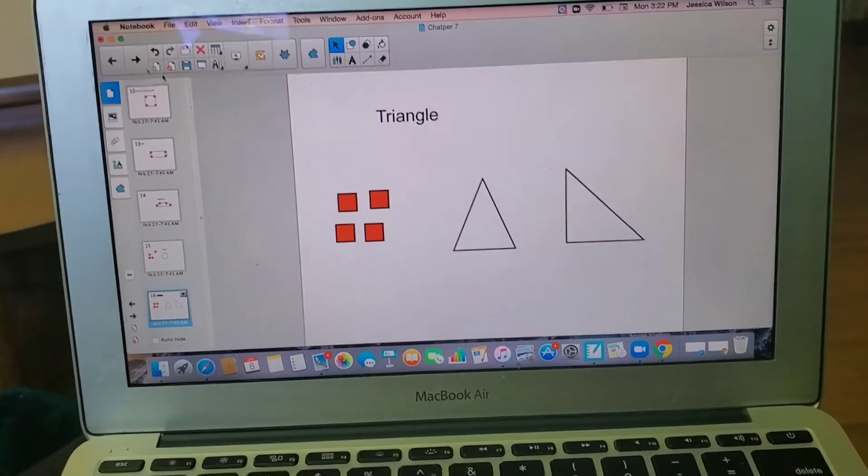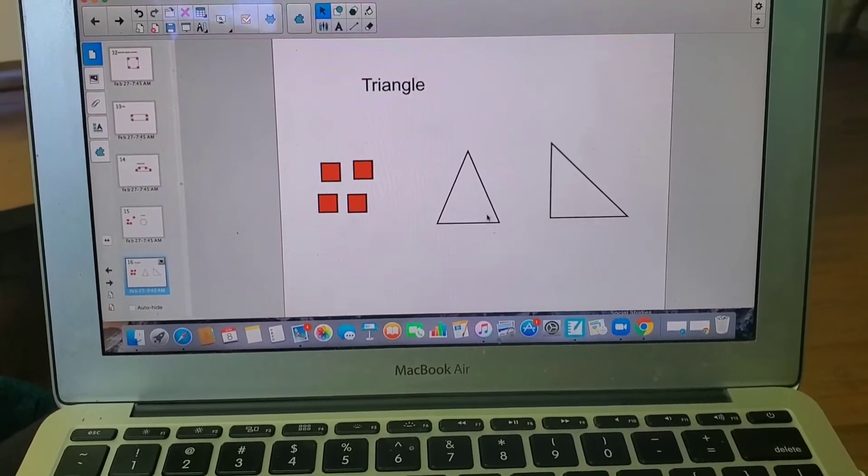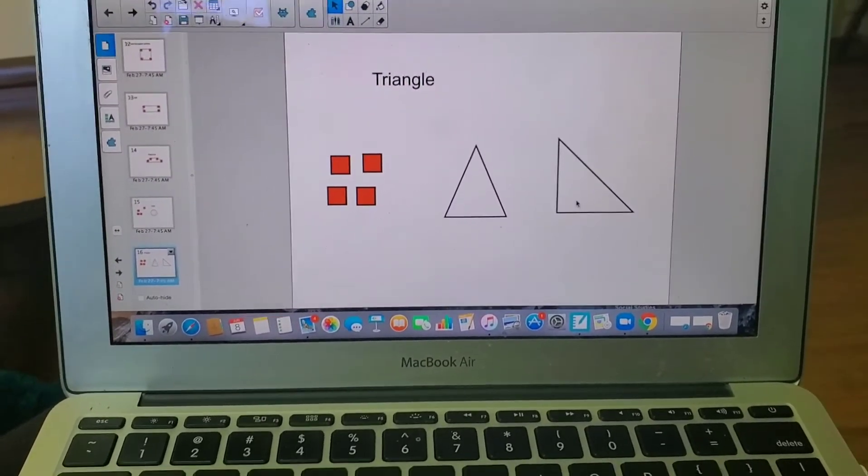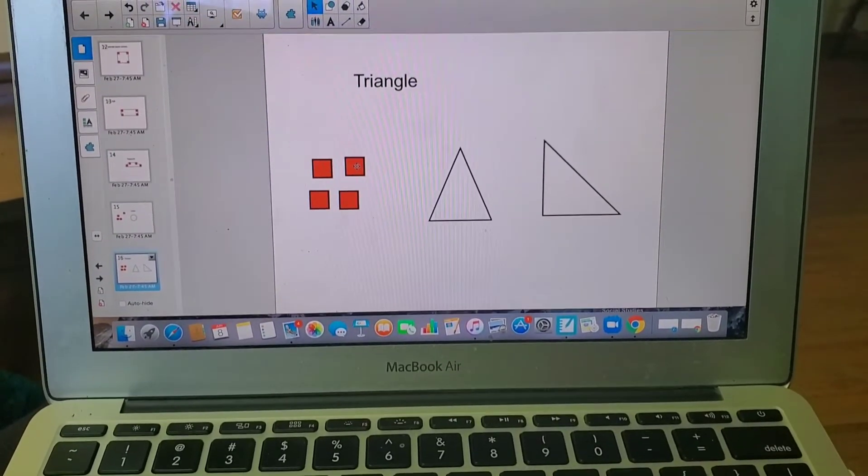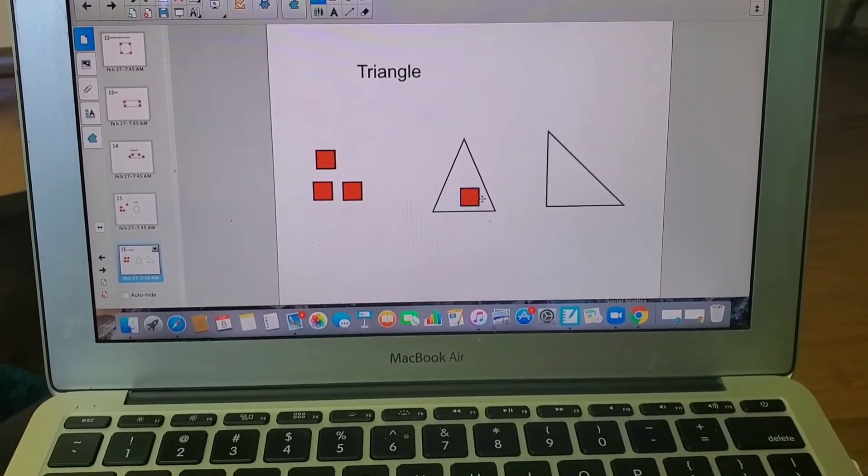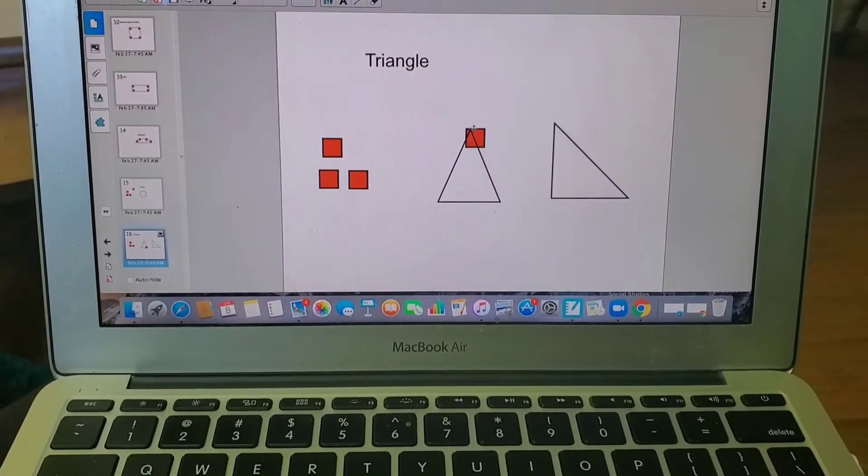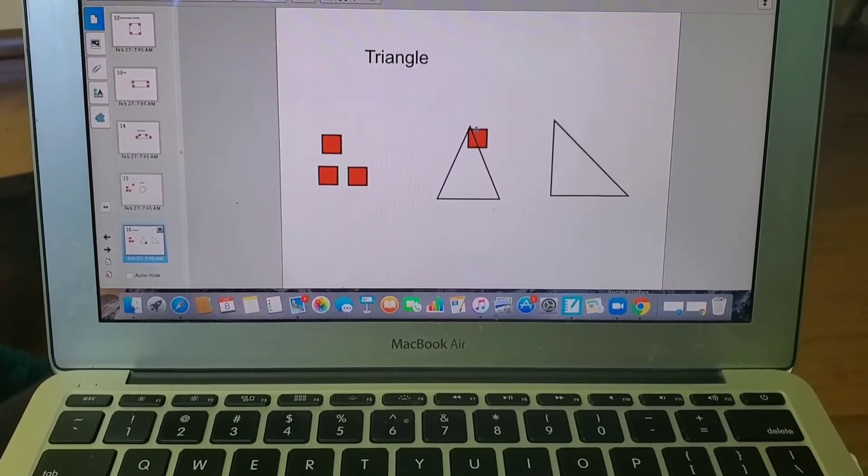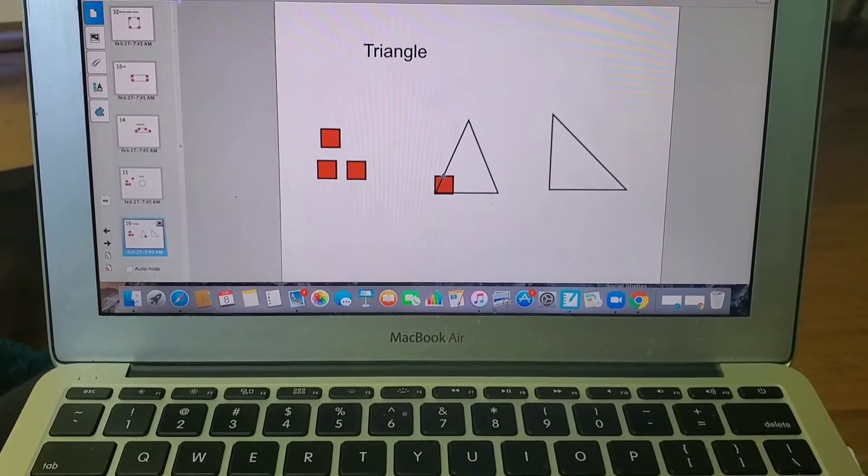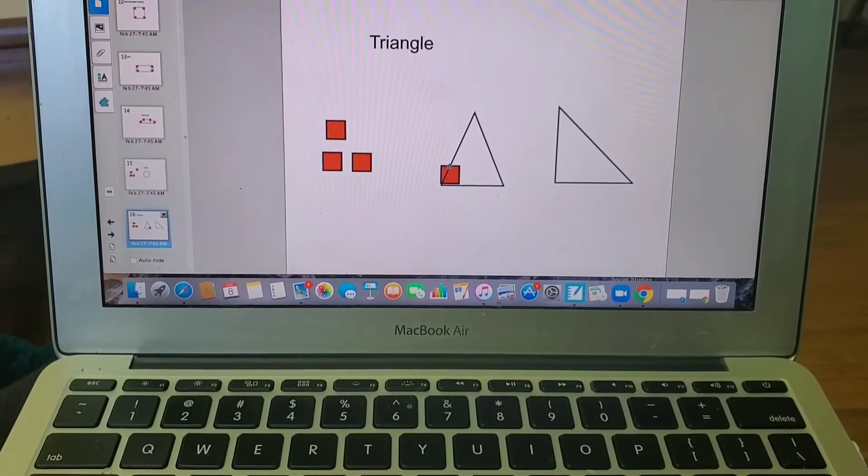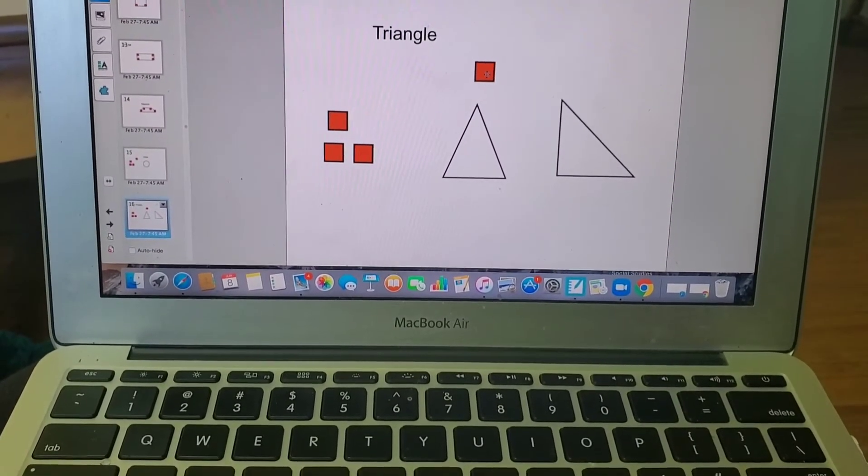Last one! So I have two triangles here: I have an isosceles triangle and I have a right triangle. Let's look at this triangle first and let's see if it has square corners. No, that one's not a square corner. No, that one's not a square either. So this triangle does not have a square corner.